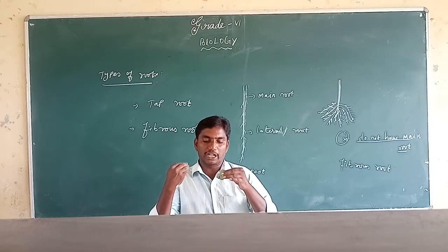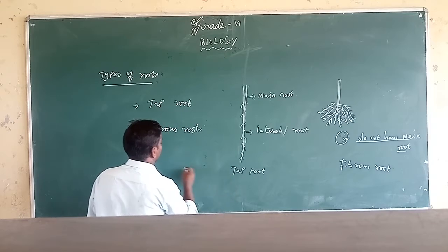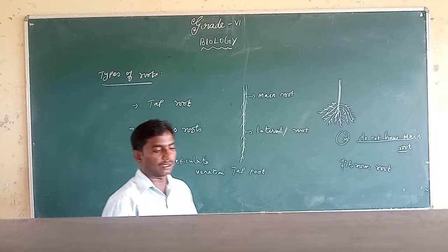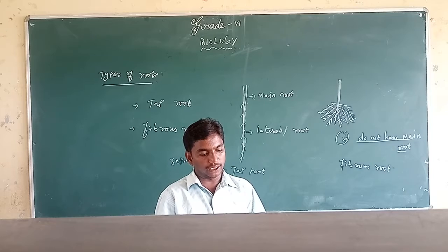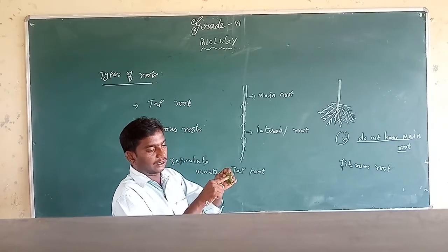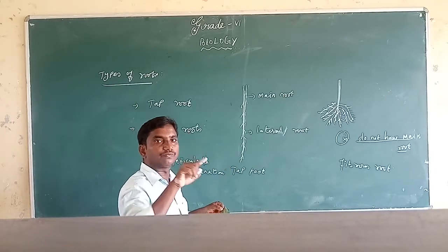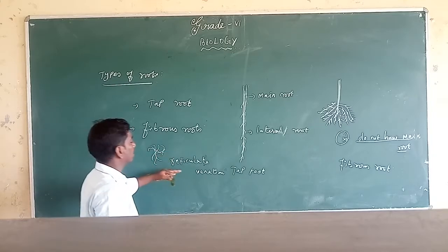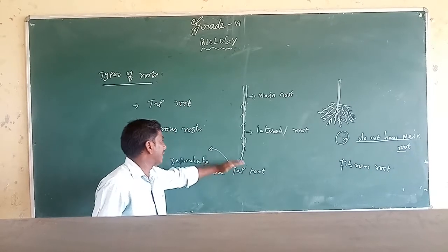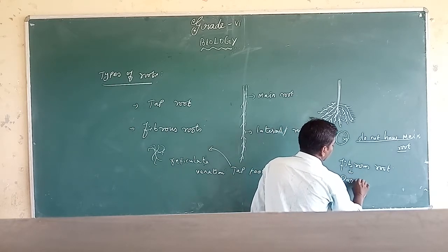Definitely, the tap root has reticulate venation. This kind of root has reticulate venation. Reticulate venation means inside the leaf, a net-like structure is present — that is called reticulate venation. The tap root has reticulate venation, and the fibrous root has parallel venation. Parallel venation means both sides are linked equally on both sides.